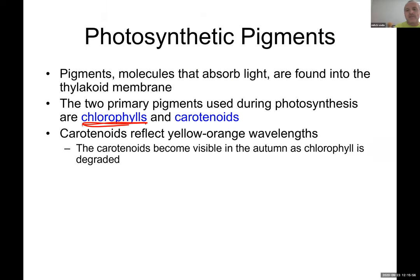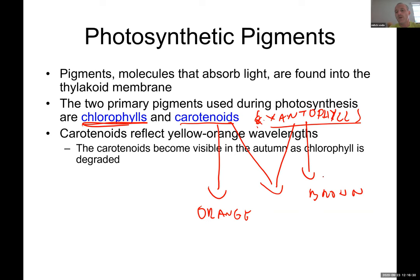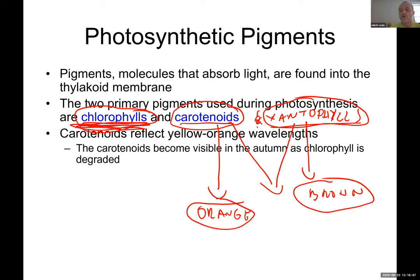Besides chlorophyll, plants have a couple of other pigments: carotenoids and xanthophylls. Xanthophylls and carotenoids give leaves different colors. Carotenoids give an orange color — the beautiful orange leaves in fall — and xanthophylls give a brownish color. In early fall, plants start losing chlorophyll, and what's left behind are these smaller-amount pigments, carotenoids and xanthophylls, which is why leaves look orangish and brownish.